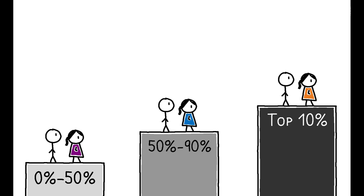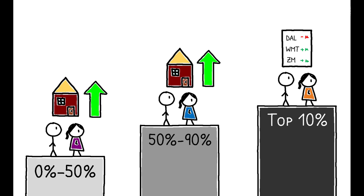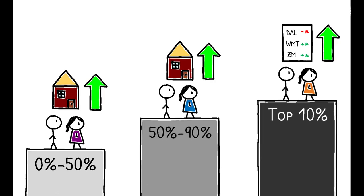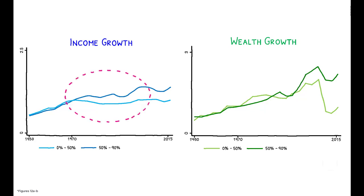This has important consequences for how the housing market and stock market affect the distribution of wealth. Changes in house prices strongly affect the middle class and have little impact on the wealthy, while the opposite is true for changes in stock prices. All else equal, periods of rising house prices reduce wealth inequality, while stock market booms increase it. This insight helps explain the patterns we saw before. While the bottom 90% lost substantial ground in terms of income between 1971 and 2007, they largely maintained their wealth share thanks to a strong housing market.